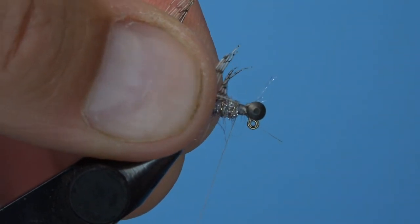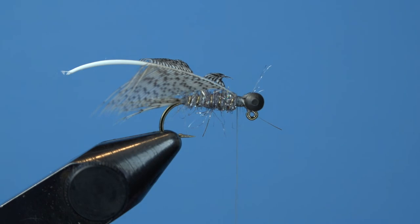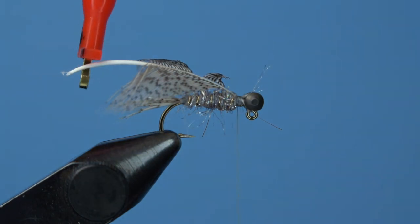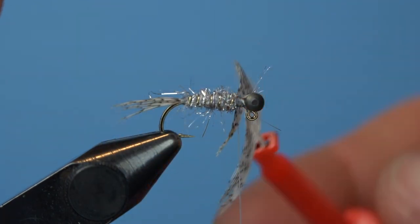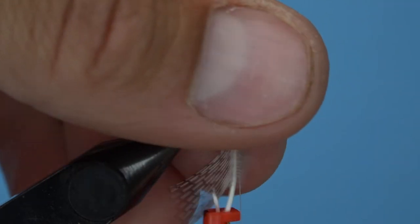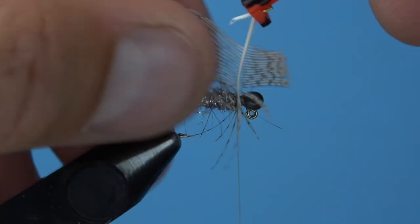Grab the butt end of the stem with some hackle pliers and begin wrapping the feather in place to form a collar around the silver dubbed body. Gently stroke those fibers rearward with each rotation of the feather to ensure their proper orientation.